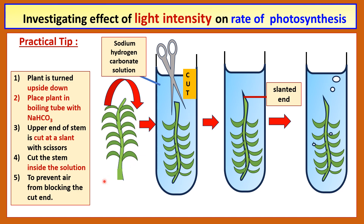This is to prevent air from outside from blocking the cut and the vessels, which would block the oxygen produced inside from coming up. We cut it in a slanted fashion, and this is to increase the surface area so that bigger bubbles may be produced. You can see the bubbles being produced and slowly popping up from the stem, emerging from the stem and floating upwards. Count how many bubbles are released in one minute, two minutes, or five minutes, depending on the question.